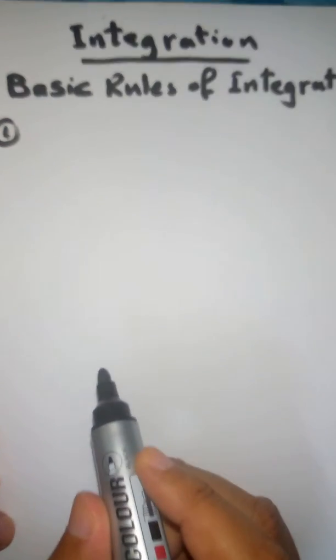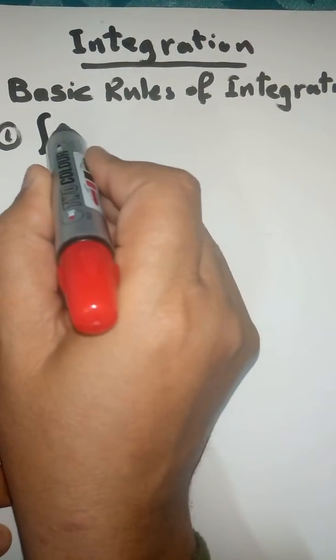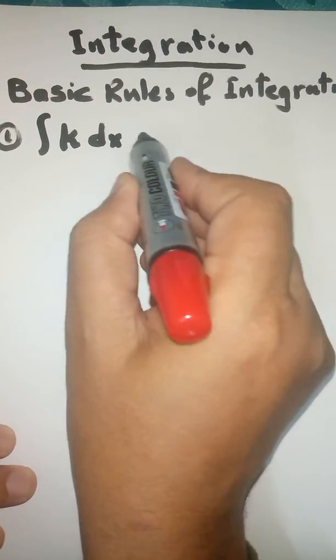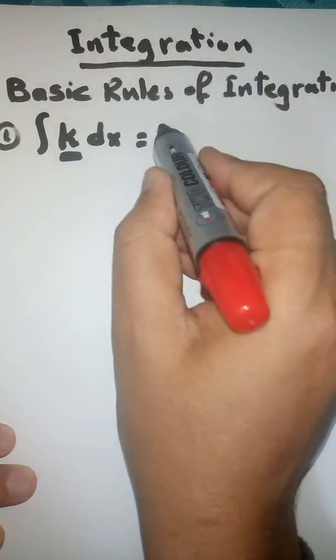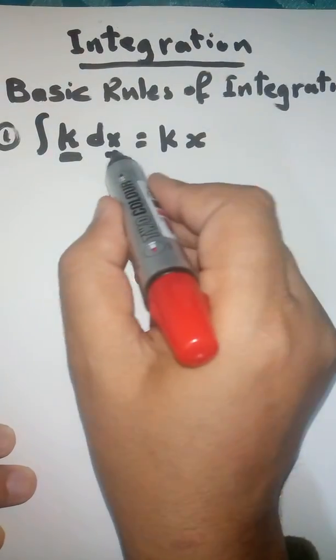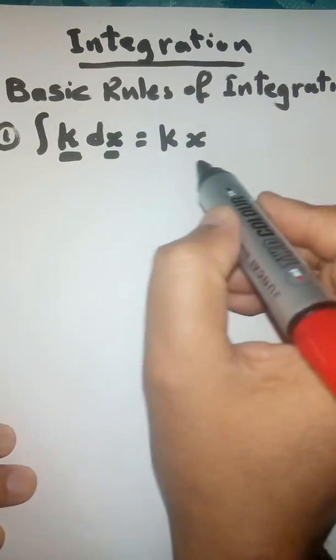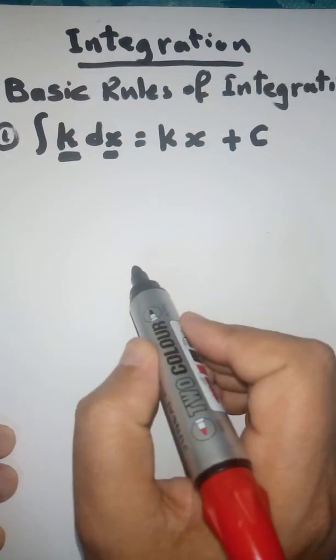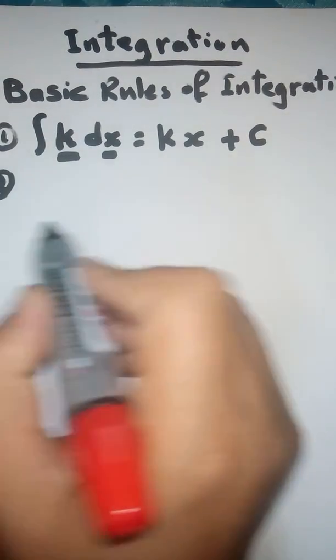Hello everyone. Today I would like to talk about some basic rules of integration. The first rule: how to get the integral of any constant K with respect to X. You will multiply this constant K by X, then add a constant of integration called C.